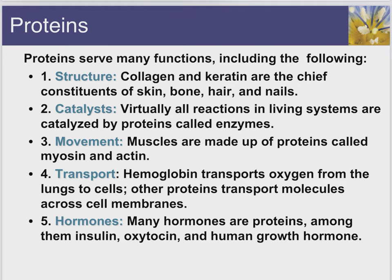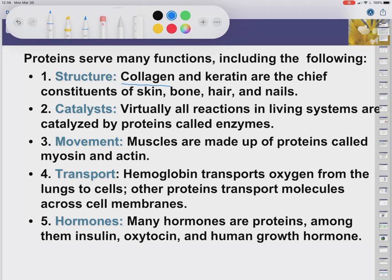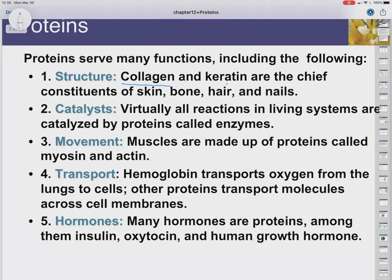Proteins have a lot of functions in our bodies. They can be structural — think of your hair, your skin, your bone. These contain proteins that are usually water-insoluble and add rigidity to the cell and to our bodies in general. Collagen is one of these structural molecules, and we'll look at its structure in a bit. Keratin is the main component of your hair and nails, and in other animals, keratin often makes up their horns.